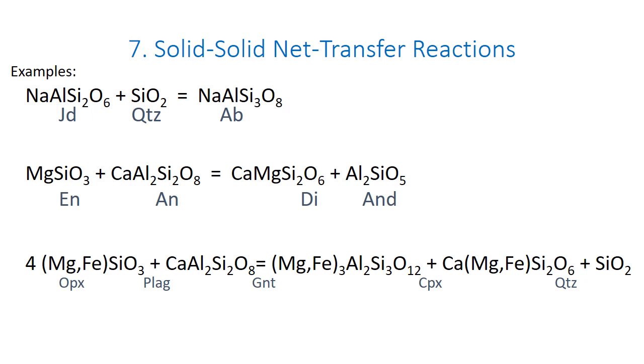Net transfer reactions differ from solid-ion exchange reactions in that the process of net transfer reactions result in changes in the modal amounts of the phases involved. Several examples that you have encountered during your reading in the previous chapters in the book include the jadeite plus quartz equaling albite system, the enstatite plus anorthite plagioclase equaling diopside and leucite system, and the orthopyroxene plus plagioclase equaling the garnet plus clinopyroxene plus quartz system.